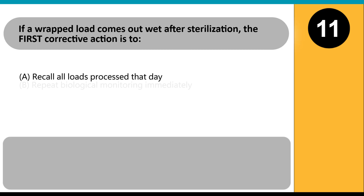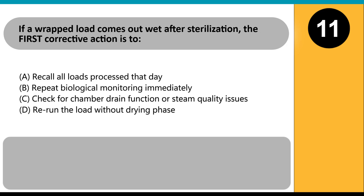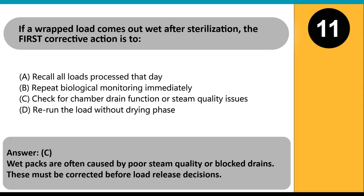If a wrapped load comes out wet after sterilization, the first corrective action is to: A. Recall all loads processed that day. B. Repeat biological monitoring immediately. C. Check for chamber drain function or steam quality issues. D. Rerun the load without drying phase. Answer: C. Wet packs are often caused by poor steam quality or blocked drains. These must be corrected before load release decisions.